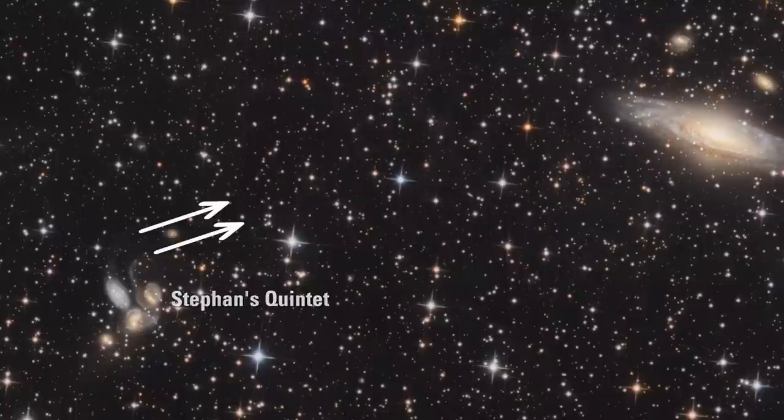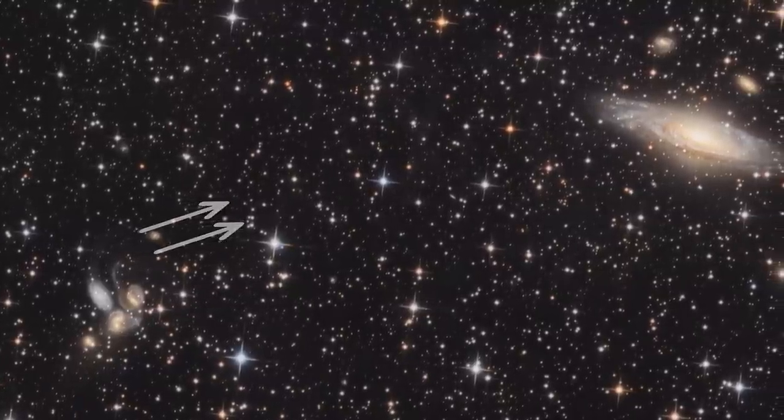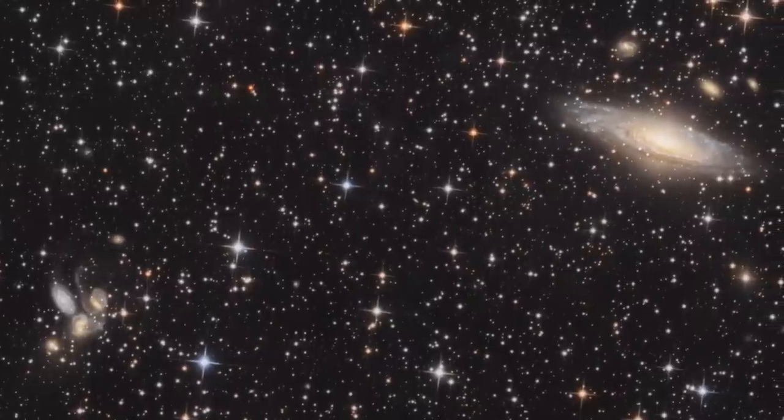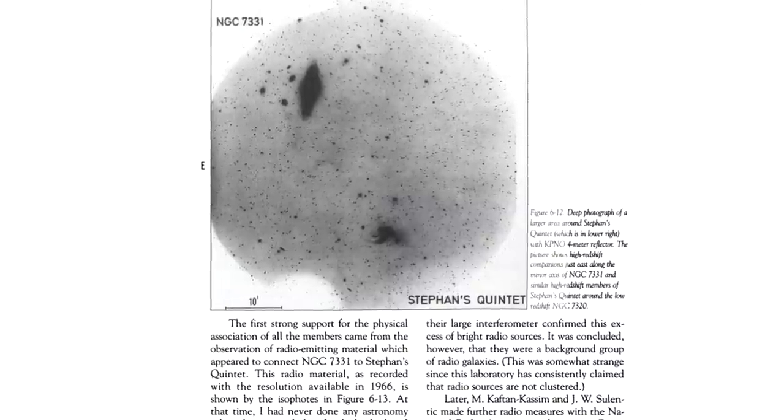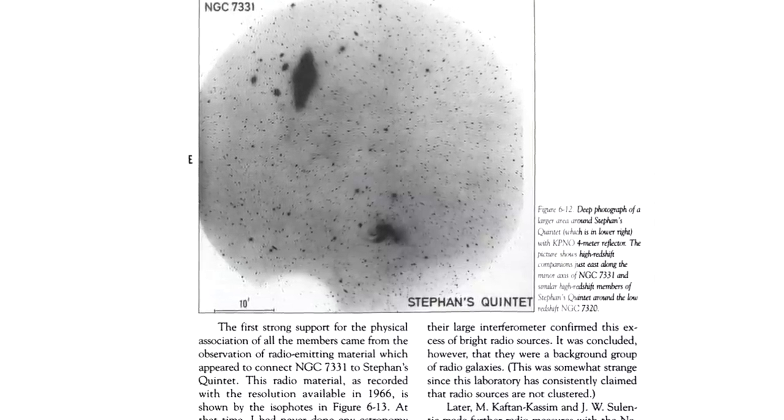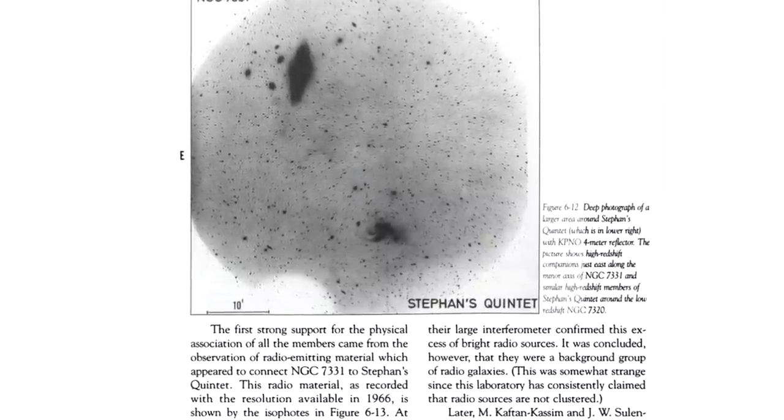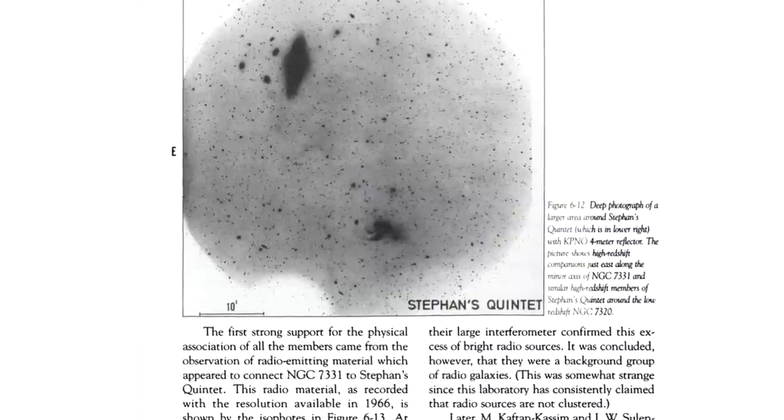On deep images, both tails trail off in parallel far toward an active large galaxy NGC 7331. Radio observations reveal a bridge of radiation that follows the path of the tails and connects Stephan's Quintet with the active galaxy.